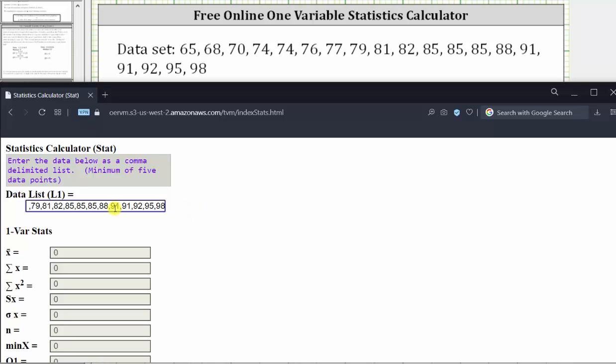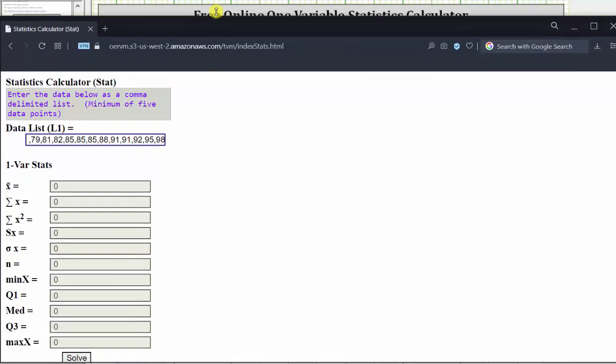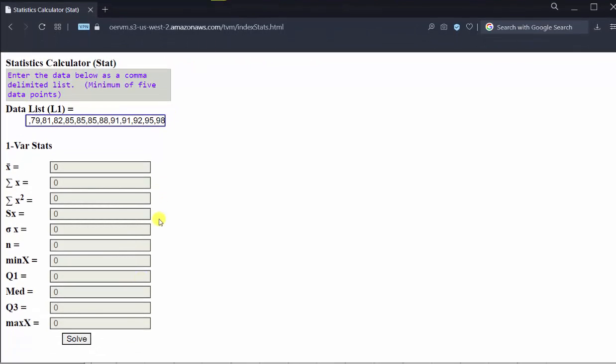Once we have double-checked the data is entered correctly, we simply scroll down and click solve. And all of the one-variable statistics are calculated.